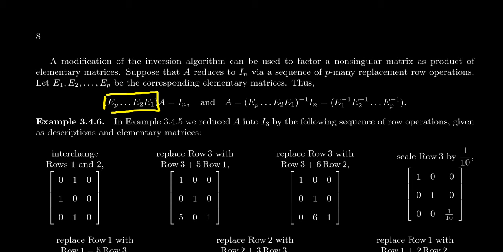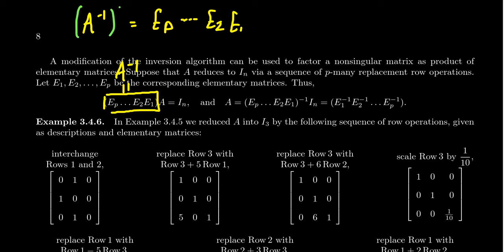This tells us that the product of EP up to E1 must be the inverse matrix of A. In other words, A inverse equals EP times EP minus 1 times EP minus 2, all the way down to E2 and E1. We can recover A by taking the inverse of both sides — the double inverse gives back the original matrix, so A inverse inverse is the matrix A.